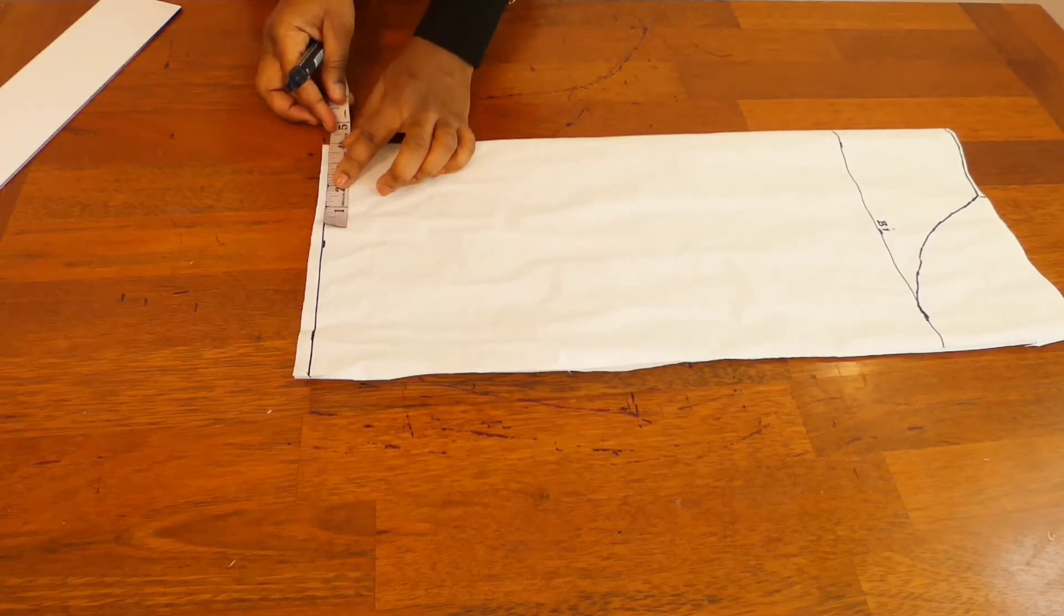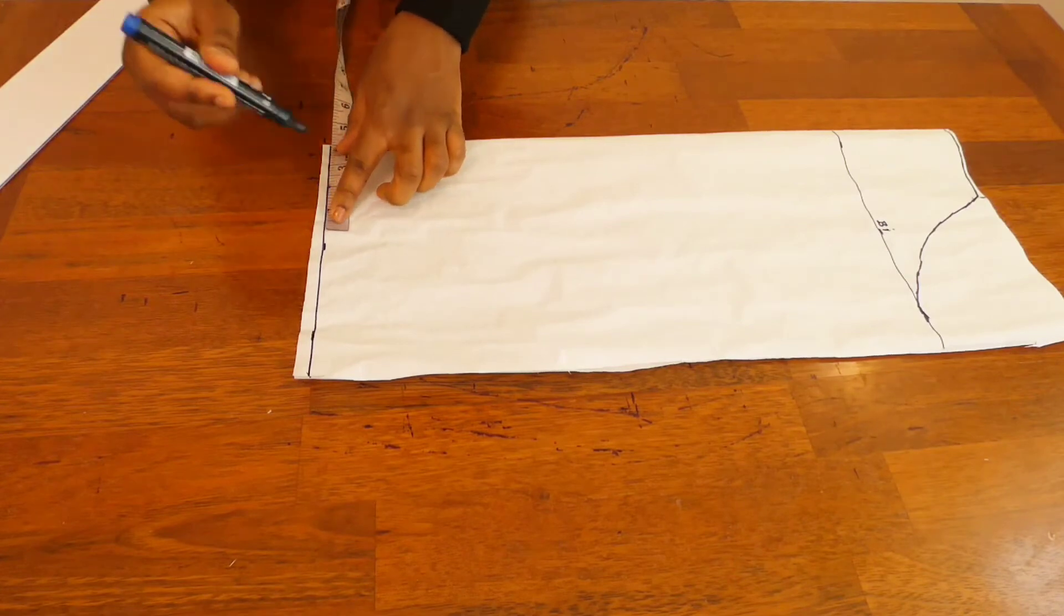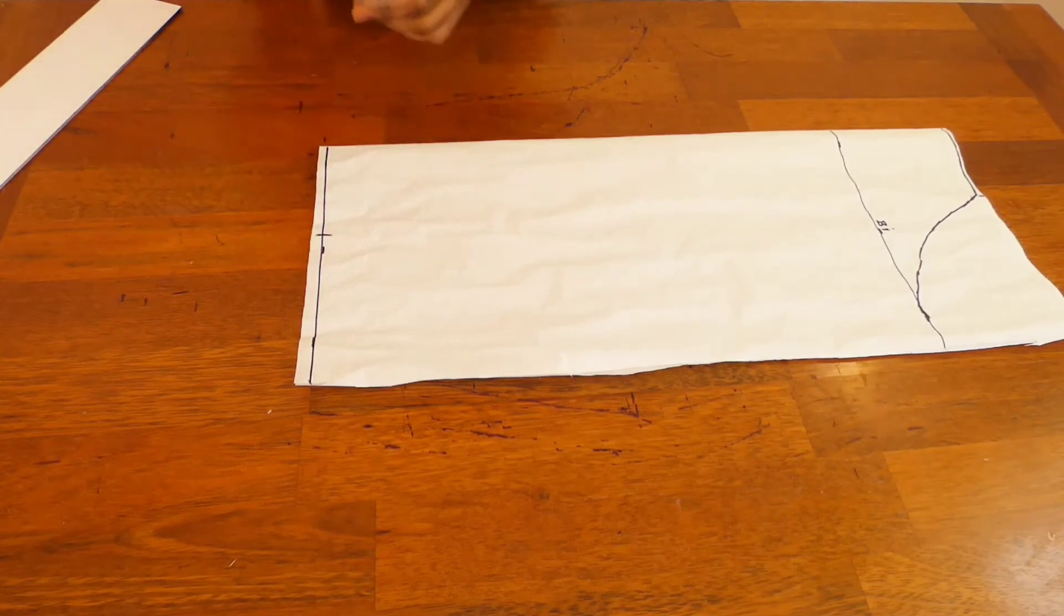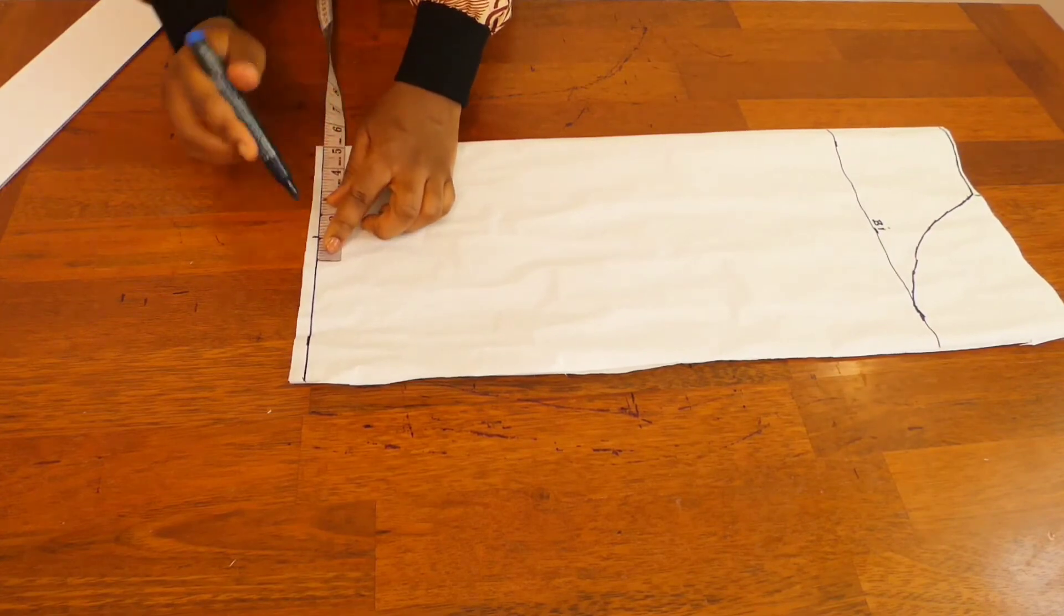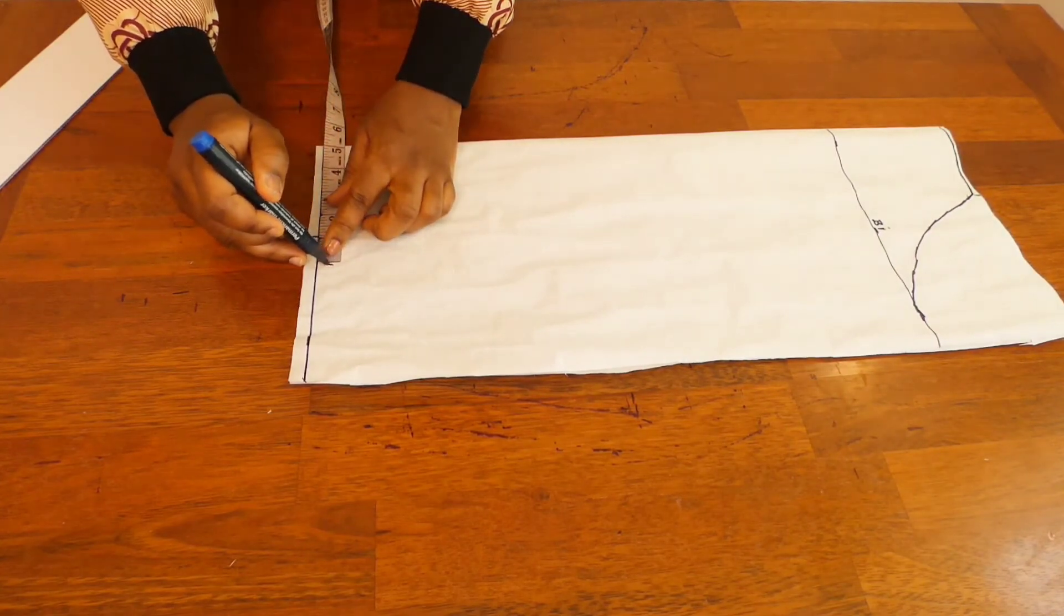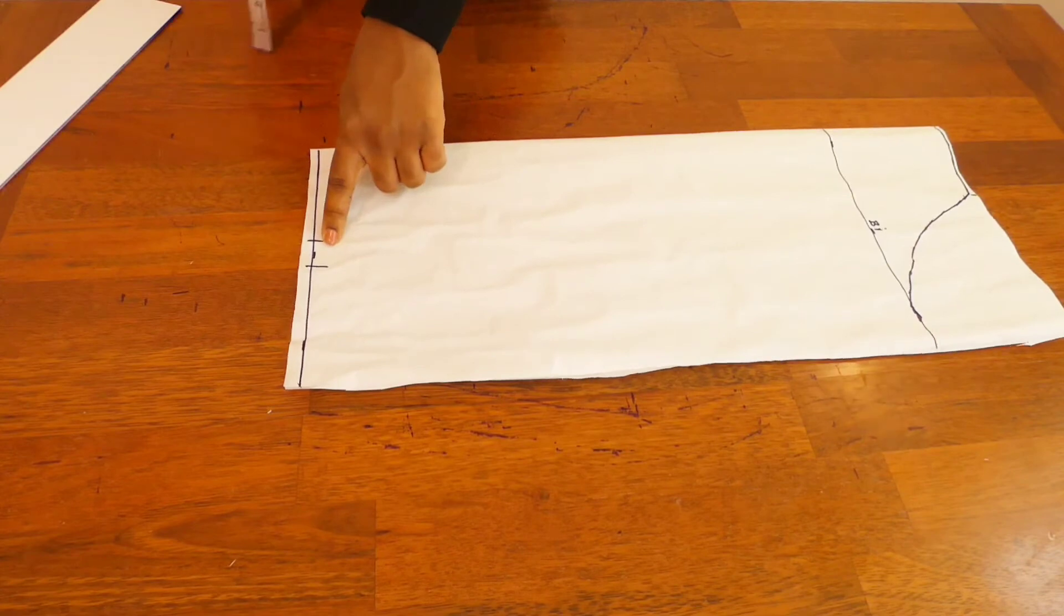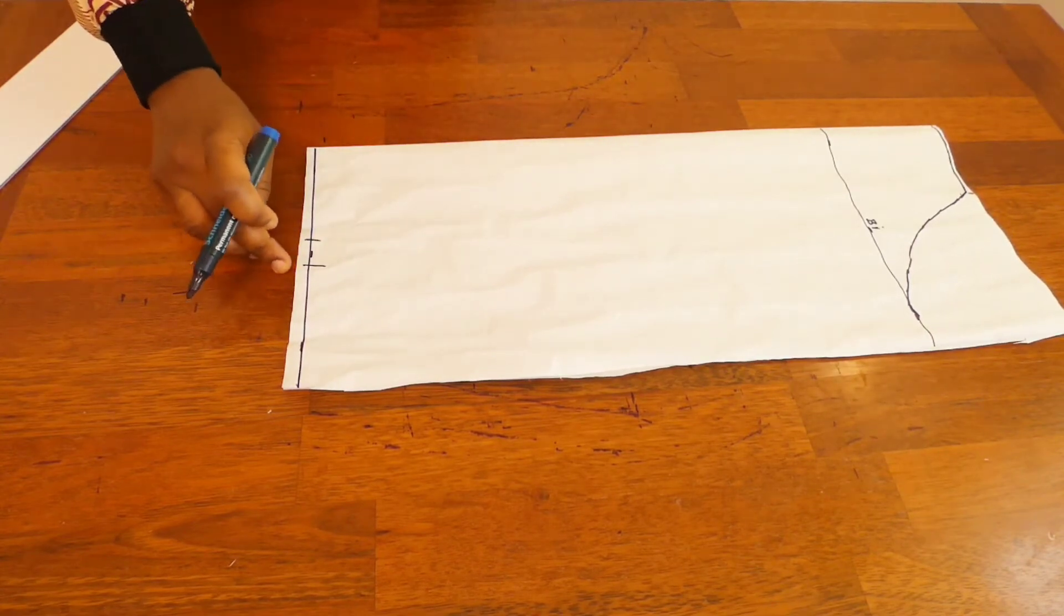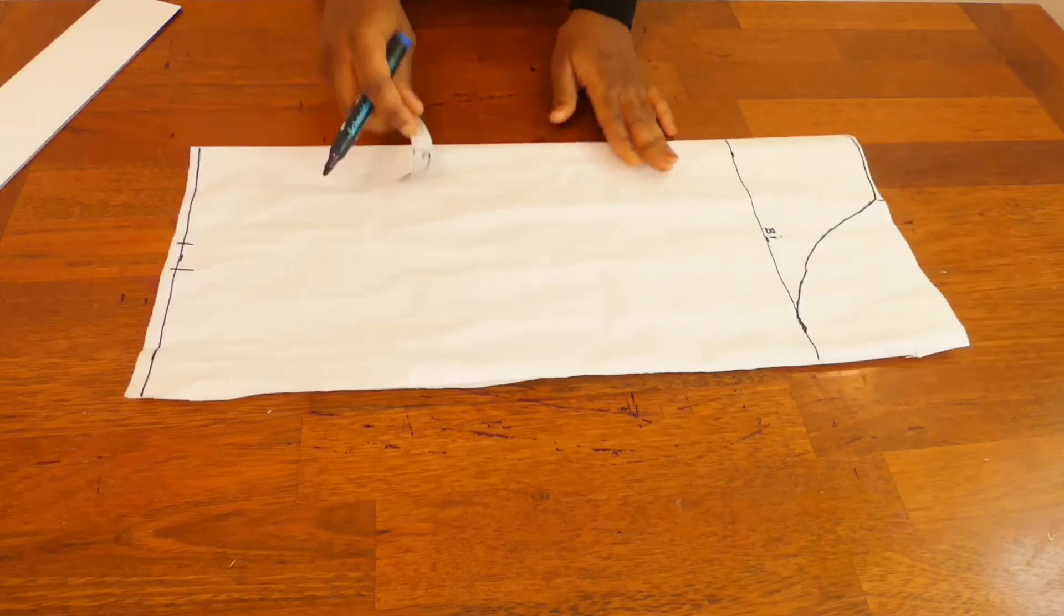So eight inches divided by two is going to give us four inches. So I'll just mark out my four inches here. Always add seam allowance, so I'm going to be adding one inch seam allowance here. So this is my four inches, which is the wrist divided by two, eight divided by two, plus one inch seam allowance.